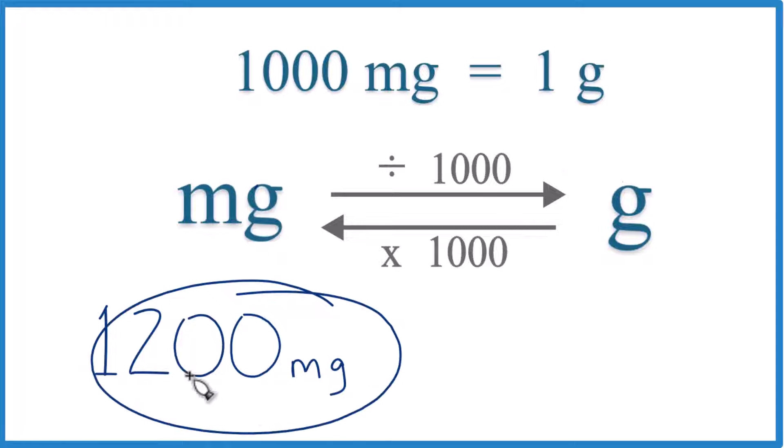So if you're given 1,200 milligrams, you need to convert that to grams. Here's how you can do it.